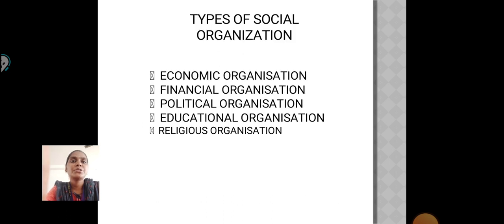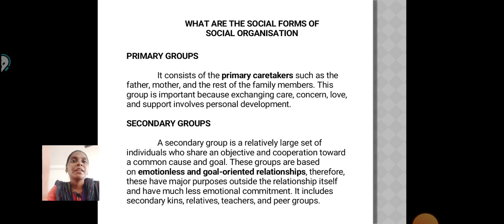Types of Social Organization: There are five types. First, Economic Organization. Second, Financial Organization. Third, Political Organization. Fourth, Educational Organization. And last, Religious Organization.